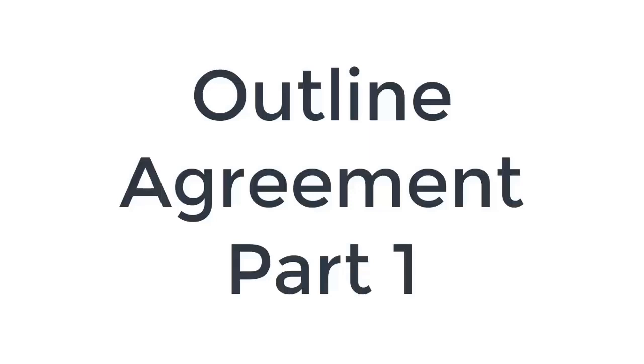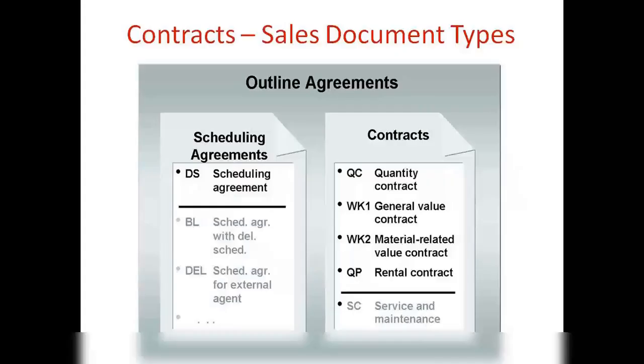Outline Agreements are similar to the sales order but with different functionalities. We have two types of Outline Agreements: Scheduling Agreements and Contracts. Let us discuss Scheduling Agreements and what is a Quantity Contract.